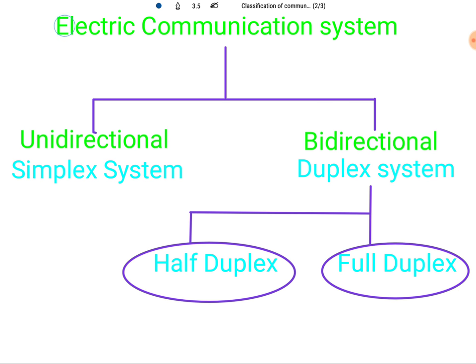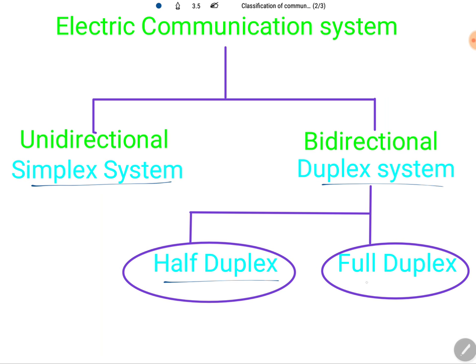Broadly, communication systems are classified into two types: unidirectional communication systems and bidirectional communication systems. In unidirectional systems we have the simplex system, and in bidirectional systems we have the duplex system, which further has two types: half duplex and full duplex.